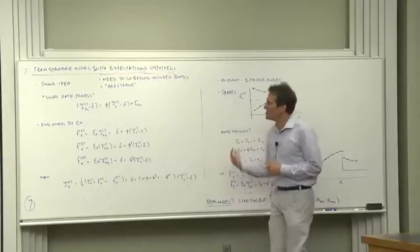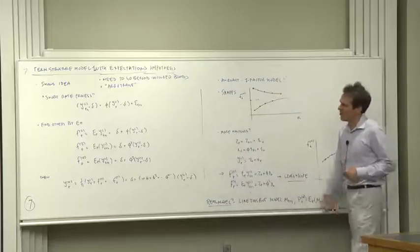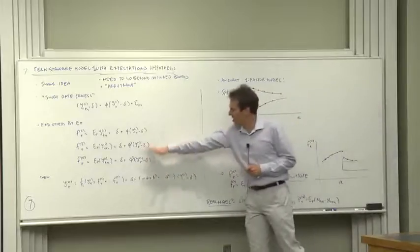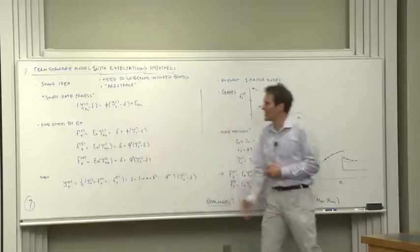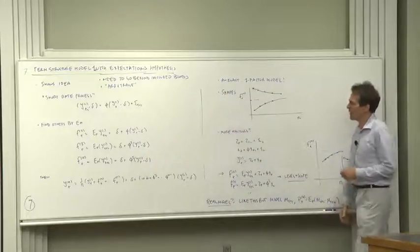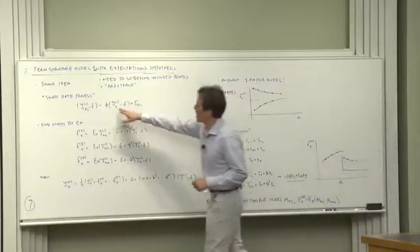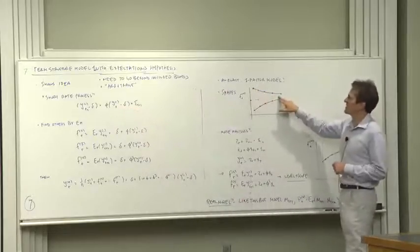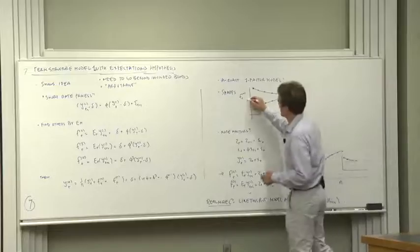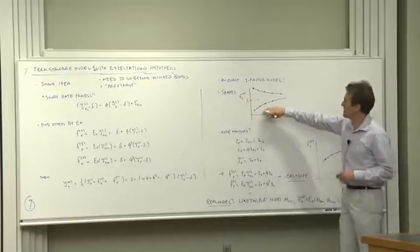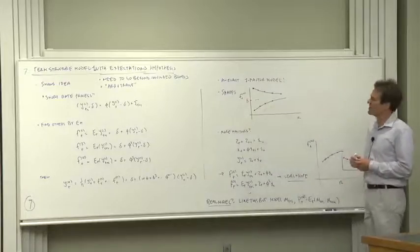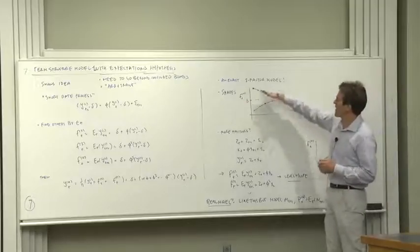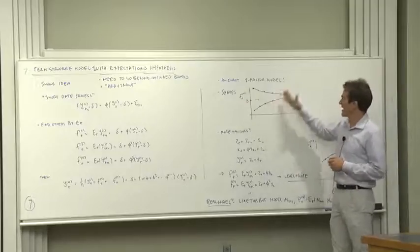Next, we're here to describe the cross section. What do forward rates look like in a slice at any moment in time? Well, if y1 is above its mean, the forward rates look like this. They decline slowly towards delta. If y1 is below its mean, the forward rates go up like that. So this model can describe term structures that look like that at any moment in time.